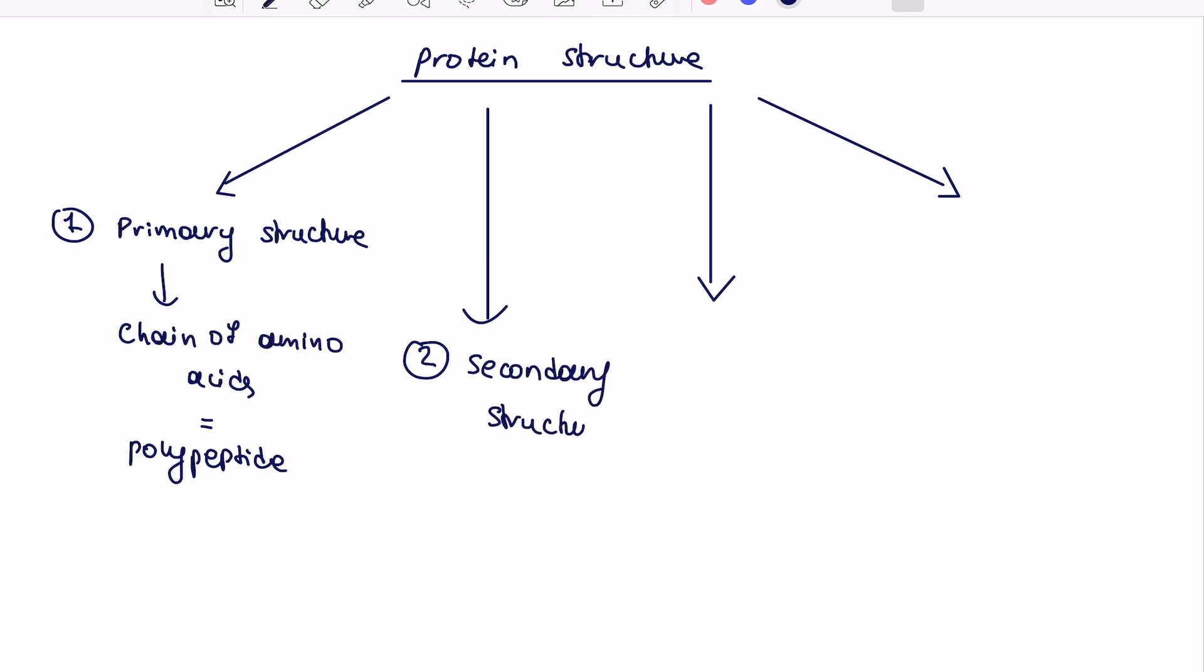Then we have a secondary structure and that is subdivided into two different components and it can come in a form of the alpha helix or beta pleated sheet.